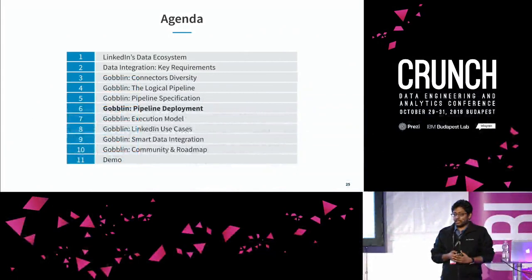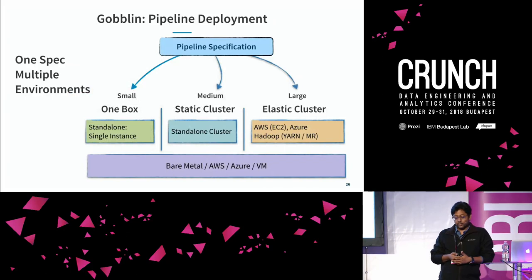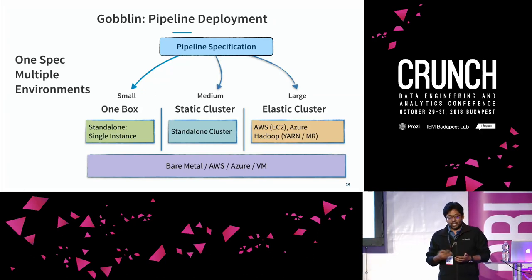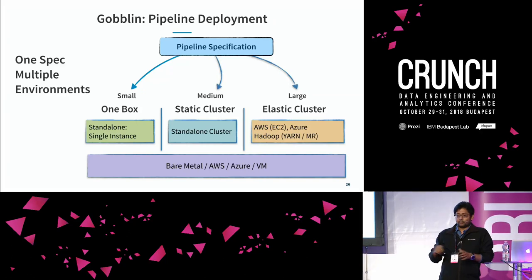The Goblin specification is not very specific to any execution platform, which means Goblin can be taken and executed anywhere. Goblin supports standalone, single, and embedded modes. If you're a startup just getting started with data integration and not sure if the product will be viable long term, you can use Goblin — write a simple properties file and run on a single box. Or use Goblin as a library, build your pipeline with constructors, and run it.